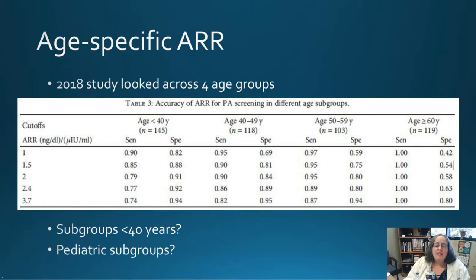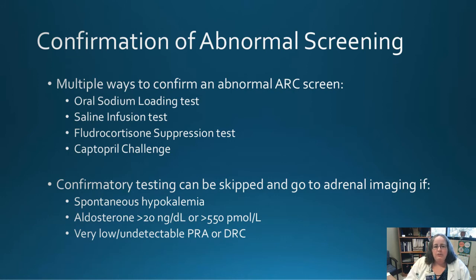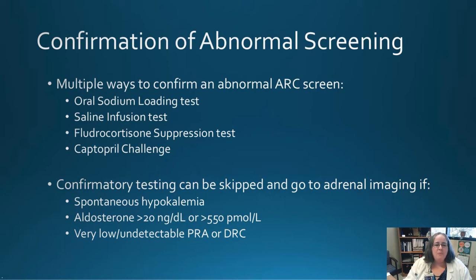The aldosterone-renin ratio is your screen. For abnormal screening results, there are several follow-up tests: the oral sodium loading test (which patients can do as outpatients), the saline infusion test, and others that stimulate various aspects of the RAS system to confirm abnormal screenings.